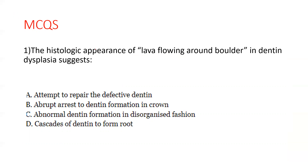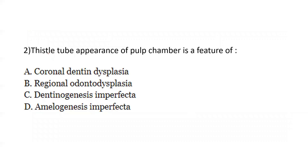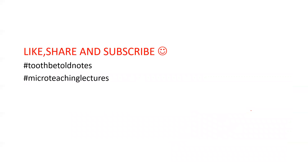Coming back to our MCQs: the histological appearance of lava flowing around boulders suggests cascades of dentin forming to form the root — dentin flows around the obstacles. The second question: the thistle tube appearance of the pulp chamber is a feature of coronal dentin dysplasia. In dentin dysplasia, radicular type shows crescent-shaped pulpal morphology, and coronal type shows thistle tube pulpal remnant. With this, I conclude the video. Thank you for watching, and for the notes, you can go to the link in the description.